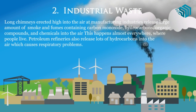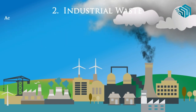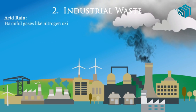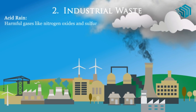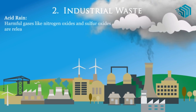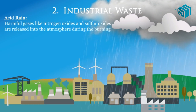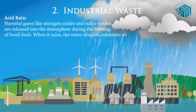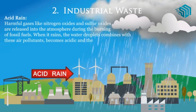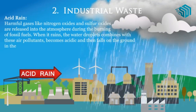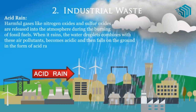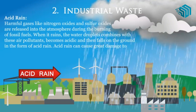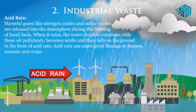4. Acid rain — harmful gases like nitrogen oxides and sulfur oxides are released into the atmosphere during the burning of fossil fuel. When it rains, the water droplets combine with these air pollutants, become acidic and then fall on the ground in the form of acid rain. Acid rain can cause great damage to humans, animals and crops.